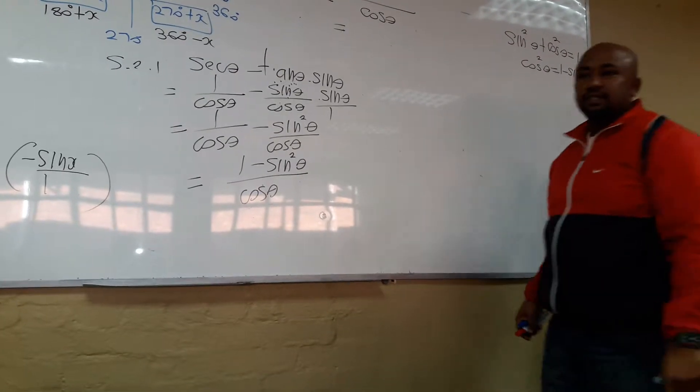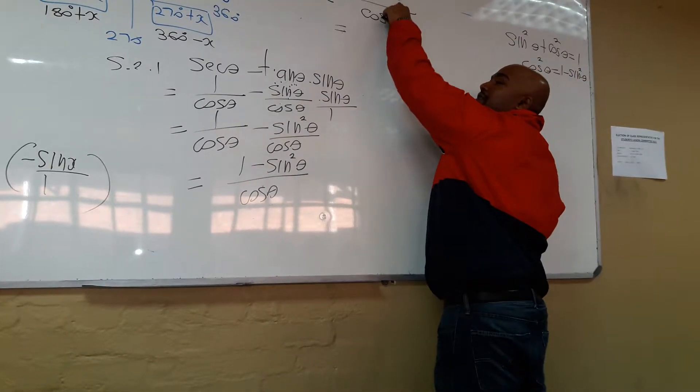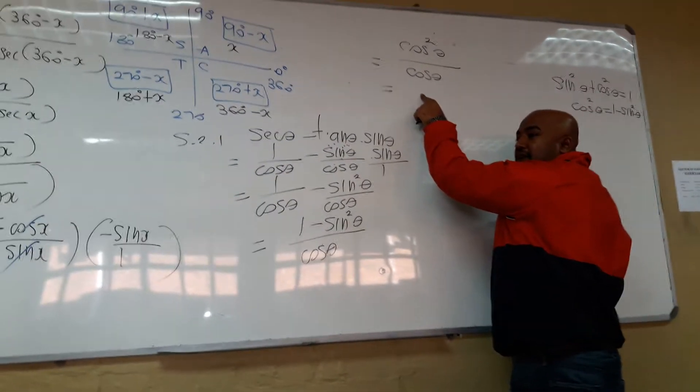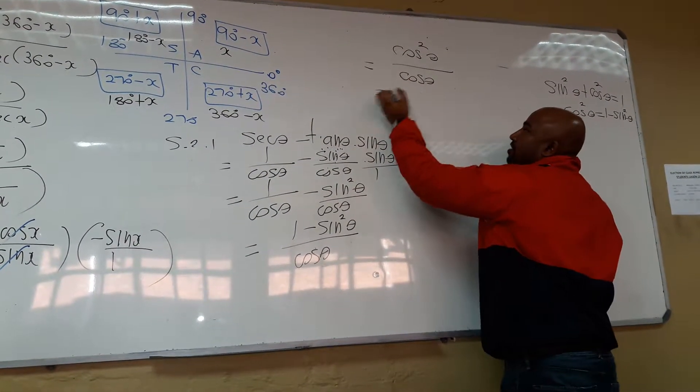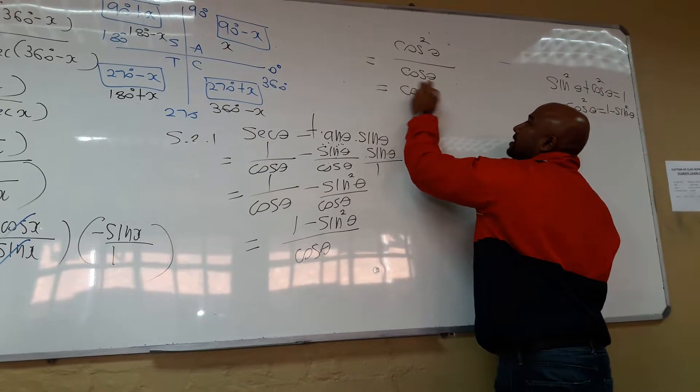these are exponents. Cosine times cosine divided by cosine. Cosine on the top, cosine in the bottom will cancel. Your final answer is just cosine.